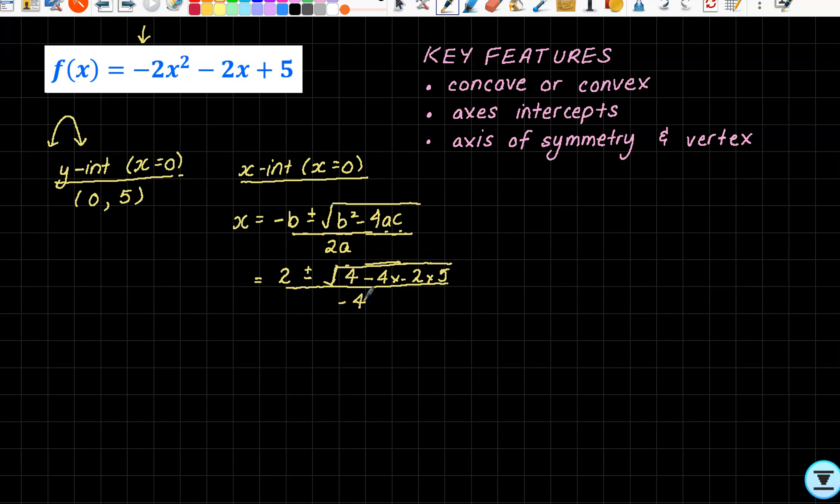All over 2 times a, so that will be 2 times -2, which is -4. We're going to tidy this up. We get 2 ± √44 all over -4.